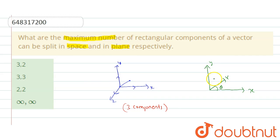So it can only be split into two components. One is v cos theta along x direction and v sin theta along y direction. So in its own plane it can only be split into two components.